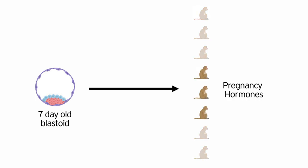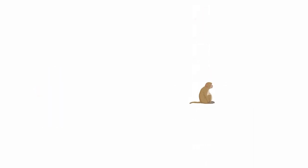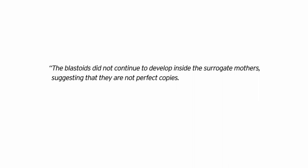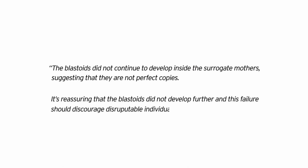As part of the study, researchers inserted seven day-old blastoids into eight female monkeys, three of which began to show hormones that indicate pregnancy. The results suggest that the blastoids can implant into the uterus and emulate aspects of pregnancy. A researcher involved in the study comments that the blastoids did not continue to develop inside the surrogate mothers, suggesting that they are not perfect copies. She goes on to say that it's reassuring that the blastoids didn't develop further and that this failure should discourage disreputable individuals from trying to pitch human blastoids as a fertility treatment.